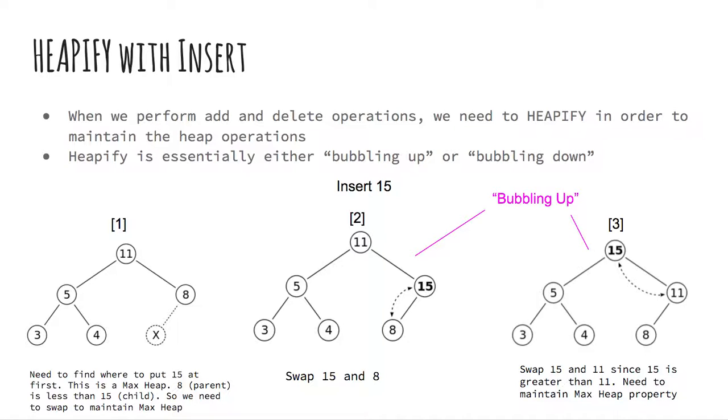For add and delete operations in a heap, we normally have to heapify. Basically we need to bubble up or bubble down. In this example, we are trying to insert 15 into this max heap. We first put 15 into the very last possible index.